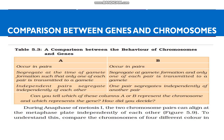What are the similarities between genes and chromosomes? Genes occur in pairs, and chromosomes also occur in pairs. Allelic pairs of a gene separate or segregate at the time of gamete formation, and homologous chromosomes also segregate at the time of gamete formation. For both genes and chromosomes, the paired condition is restored during fertilization.